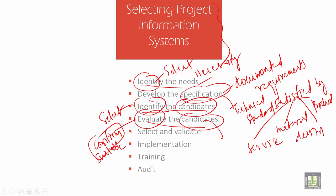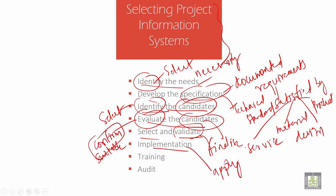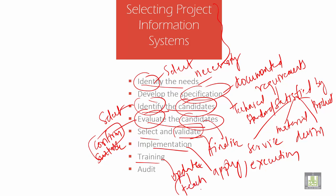Then select and validate — finalize and implement, applying the information from them. Then train: training is giving updates, the latest employment implementation, applying or execution.